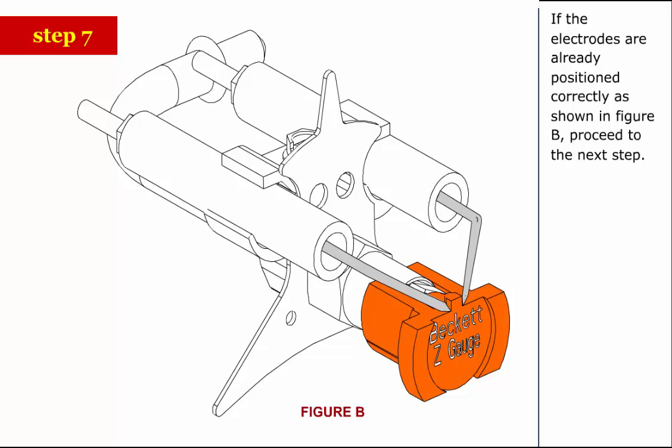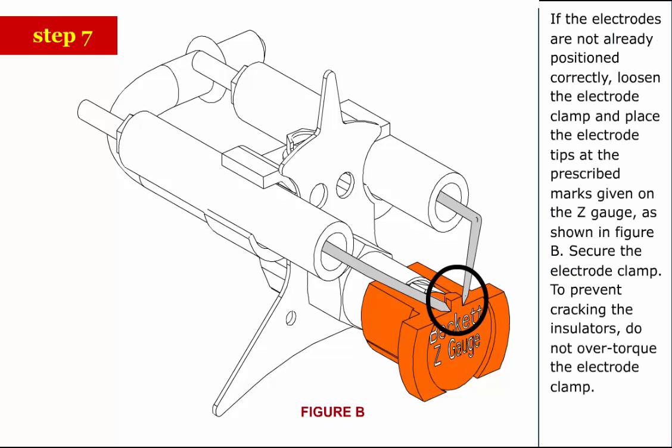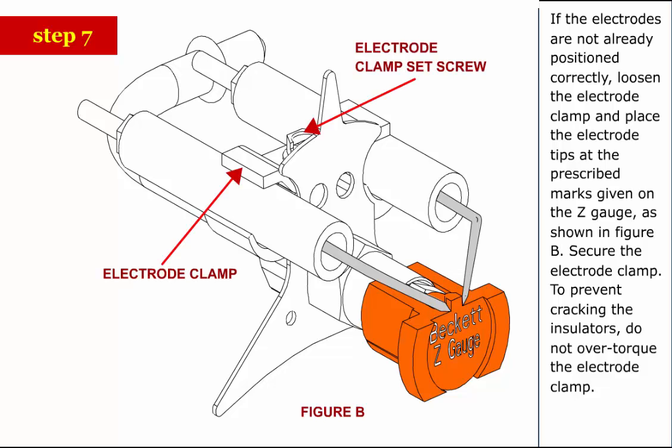Step 7: If the electrodes are already positioned correctly as shown in figure B, proceed to the next step. If not, loosen the electrode clamp and place the electrode tips at the prescribed marks given on the Z gauge as shown in figure B. Secure the electrode clamp.